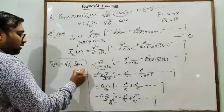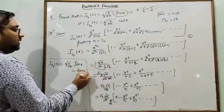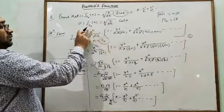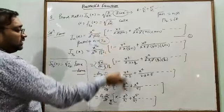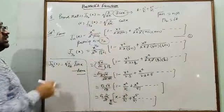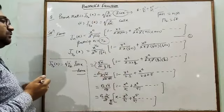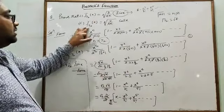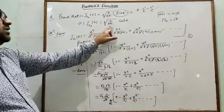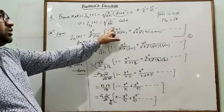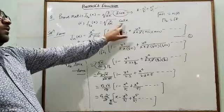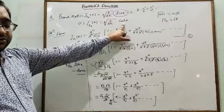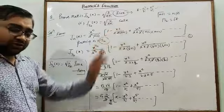So J_{1/2}(x) = √(2/πx) · sin(x) is proved. Similarly, if we replace n by −1/2 and follow the same process, we can get J_{-1/2}(x) = √(2/πx) · cos(x). This part can be solved by yourself.